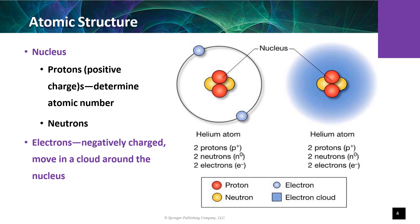The nucleus is positively charged, while protons and neutrons have no charge. Electrons are negatively charged, and due to this, they are attracted to the nucleus and orbit it, creating a negatively charged cloud.